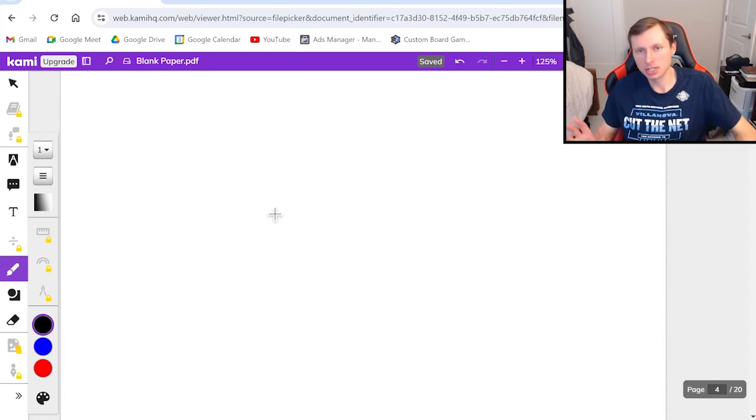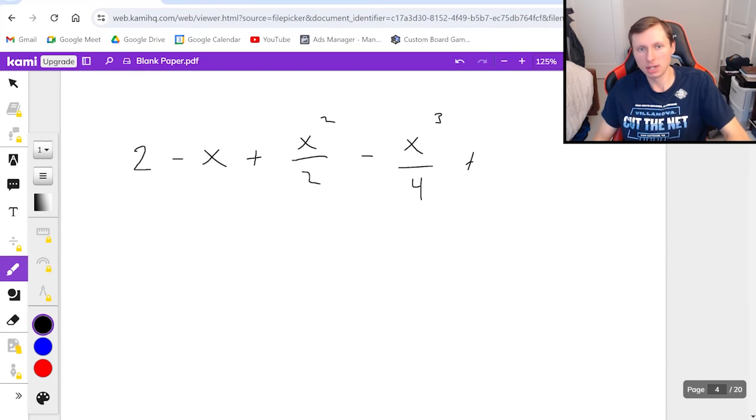Now the only other problem I'm worried that you would see is something like this where they give you the first few terms of the series. Let's say it's 2 minus x plus x squared over 2 minus x cubed over 4 plus dot dot dot. And the question again would be find the radius and the interval of convergence and write this as a power series.